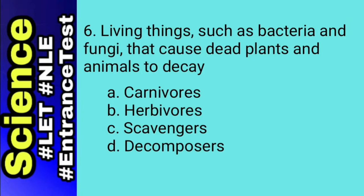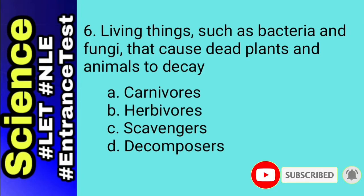For this number, let's define all of the choices. Carnivores kill and eat other animals. Herbivores are organisms that obtain energy and nutrients by eating plant leaves. Scavengers are animals that consume the carcasses of other animals that have been killed by predators or have died of other causes. Decomposers are organisms that feed by chemically breaking down organic matter, causing it to decay. So the answer for number 6 is letter D, decomposers.